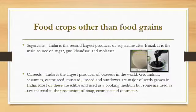Food crops other than food grains. Sugarcane: India is the second largest producer of sugarcane after Brazil; it is the main source of sugar, jaggery, khandsari, and molasses. Oil seeds: India is the largest producer of oil seeds in the world. Groundnut, sesame, castor seed, mustard, linseed, and sunflower are major oil seeds grown in India. Most are edible and used as cooking medium, but some are used as raw material in the production of soap, cosmetics, and ointments.